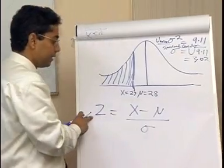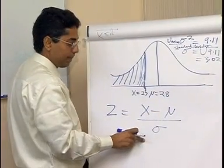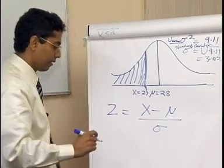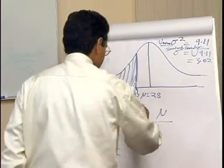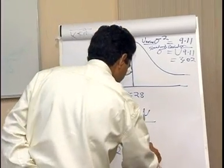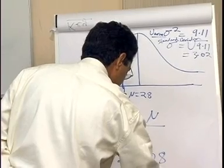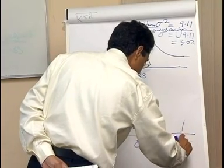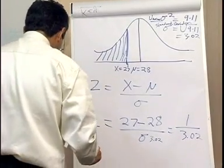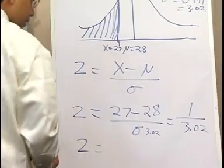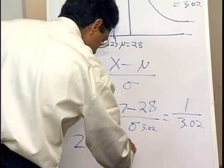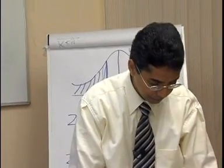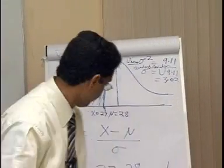The formula for z is x minus mu on sigma. We know mu, x, and sigma. So z equals 27 minus 28, on sigma 3.02, which equals negative 1 over 3.02. This means z is approximately negative 0.33. In the back of your exam book you will see a z distribution table. The negative sign means the area is on the left-hand side of the curve.